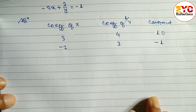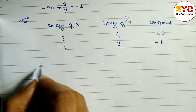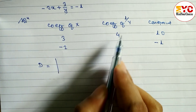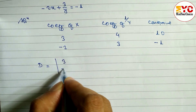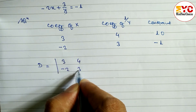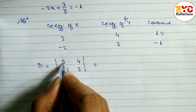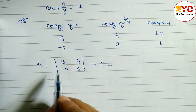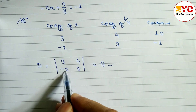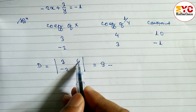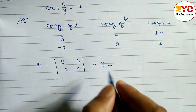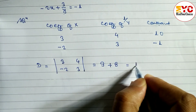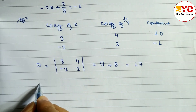Now we have to find the values of D, D1, and D2. To find D, we take the coefficients of x and 1 by y: 3, minus 2 and 4, 3. The determinant is the main diagonal 3 into 3, which is 9, minus the other diagonal minus 2 into 4, which is minus 8, giving us 9 plus 8 equals 17.